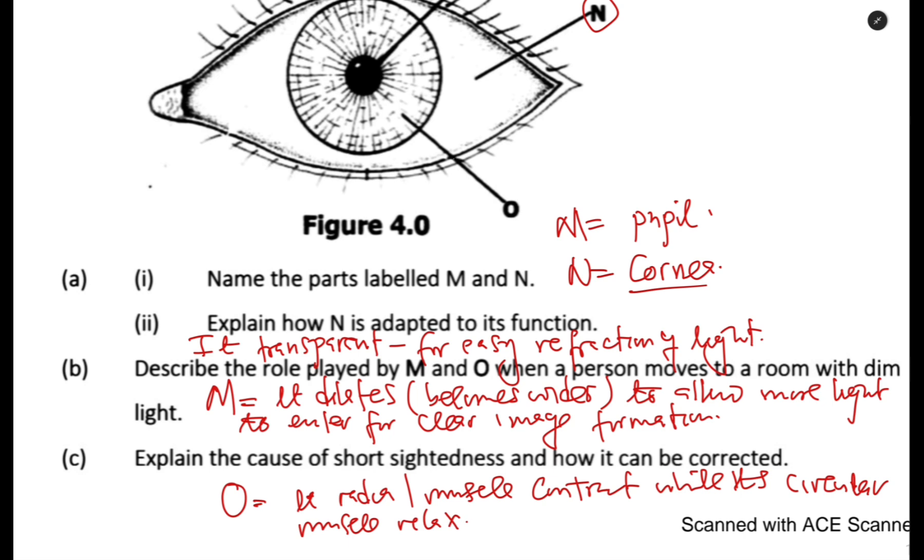Then for C, explain the causes of short-sightedness and how it can be corrected. So, in the previous video, I did explain how it is caused. So, it is caused, it is caused by an abnormality.